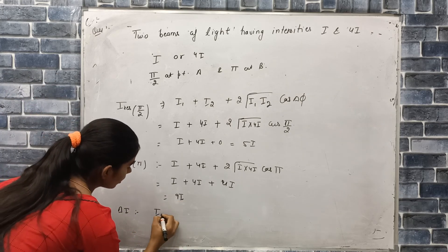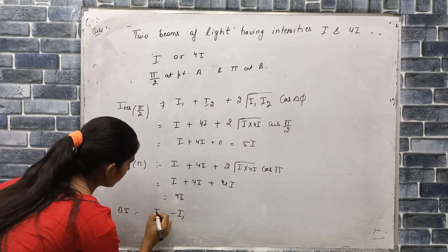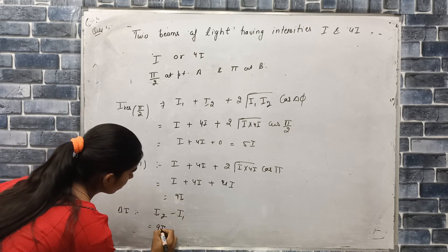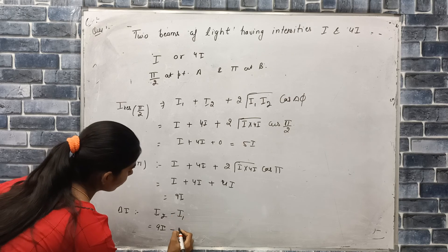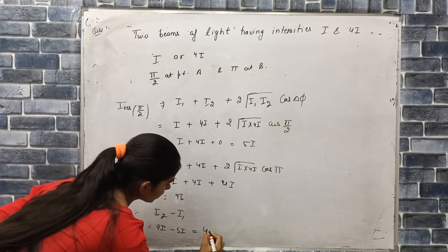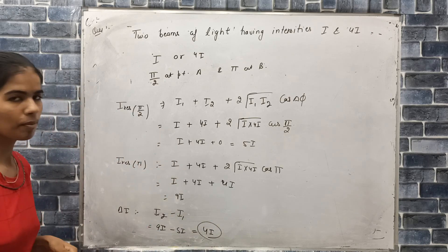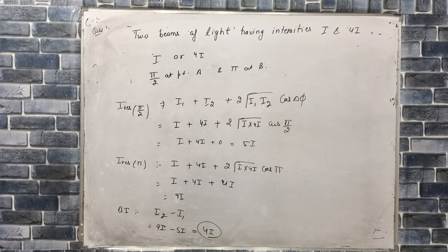Therefore the difference is 5I minus I equals 4I. This is the answer.